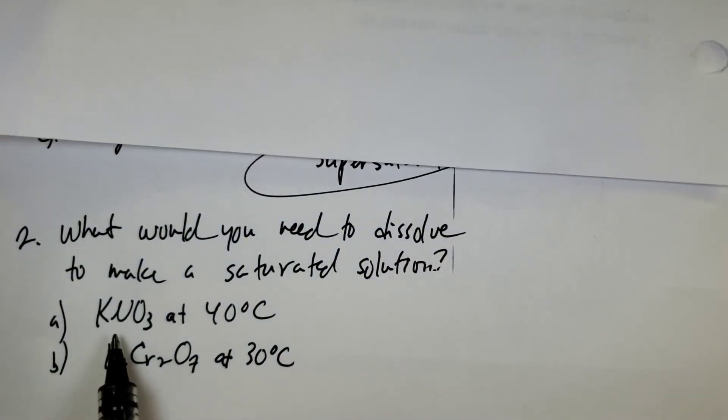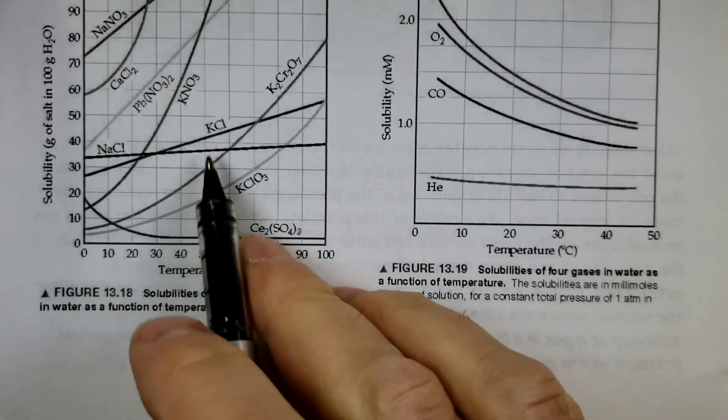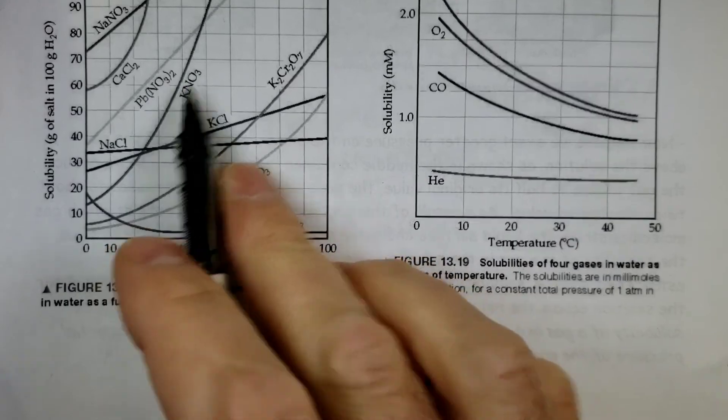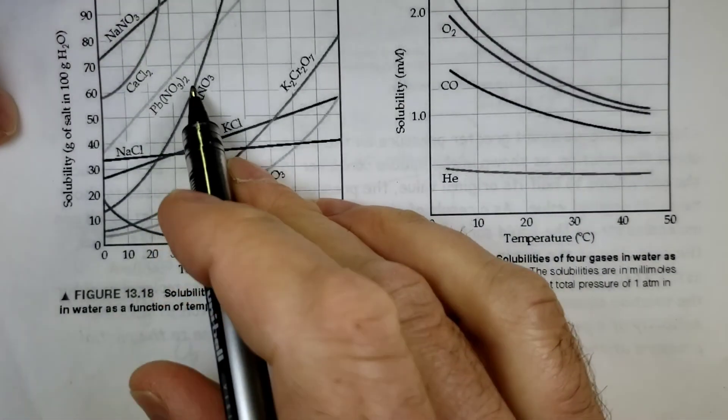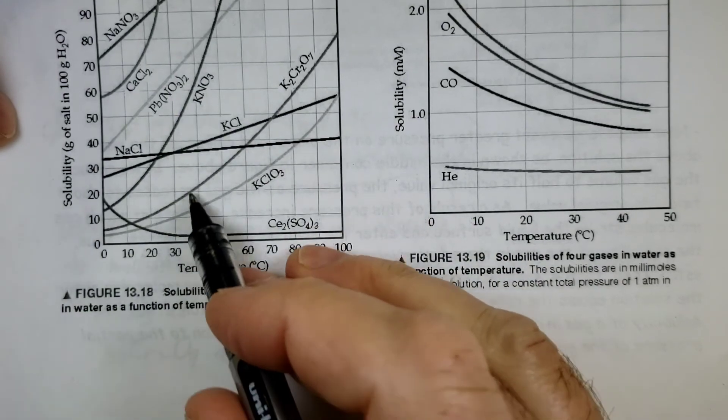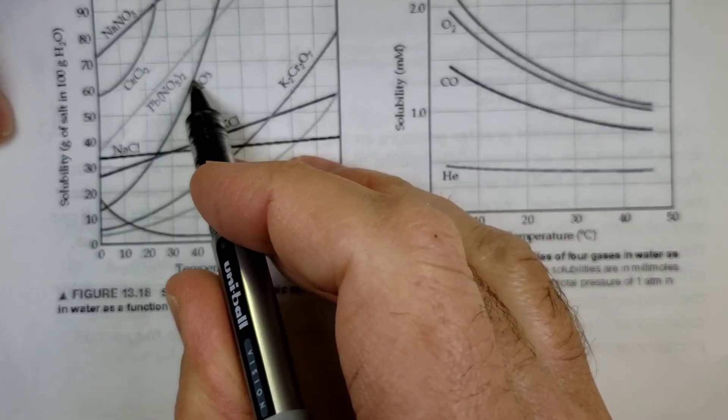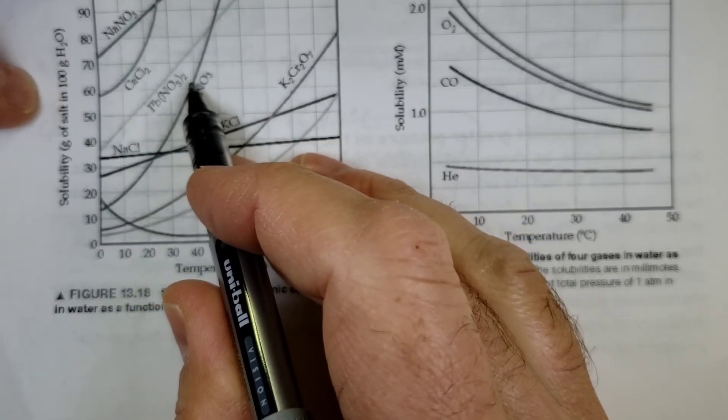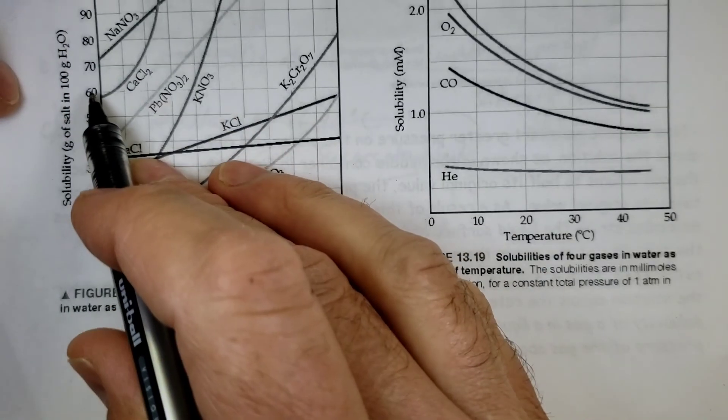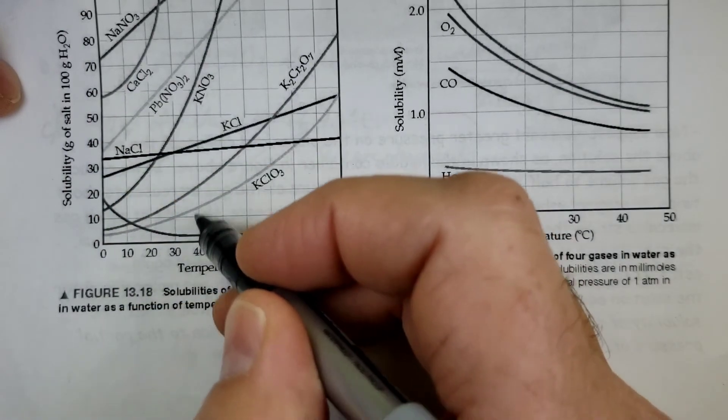So let's take a look. So KNO3. Let's take a look at KNO3. Here it is right here. And if I wanted to make a saturated solution at 40 degrees C. So here's KNO3. Here's 40. So if I go up until I hit the curve, looks like it's almost halfway in between 60 and 70. Maybe slightly less than half. So it looks like it would be around 64.